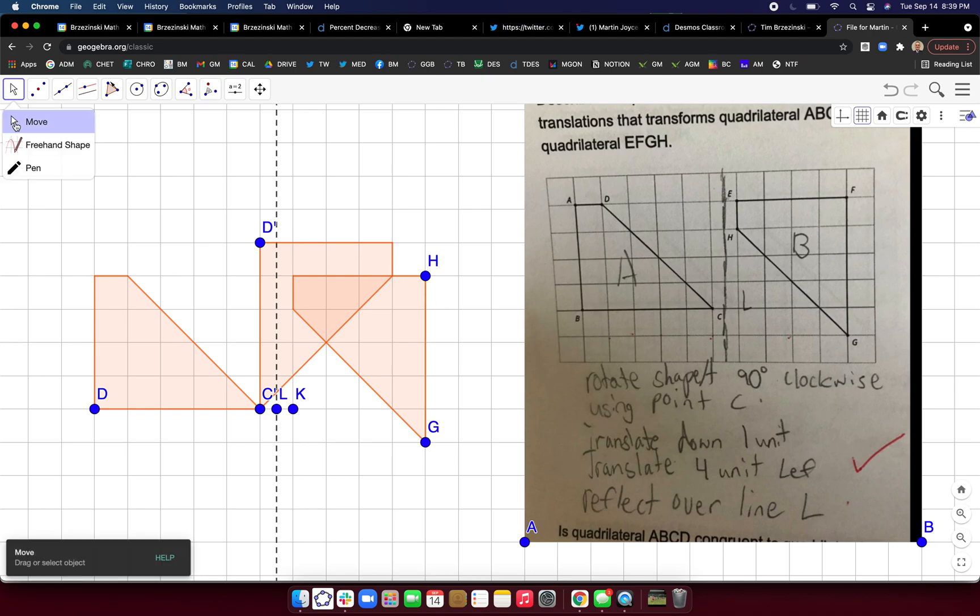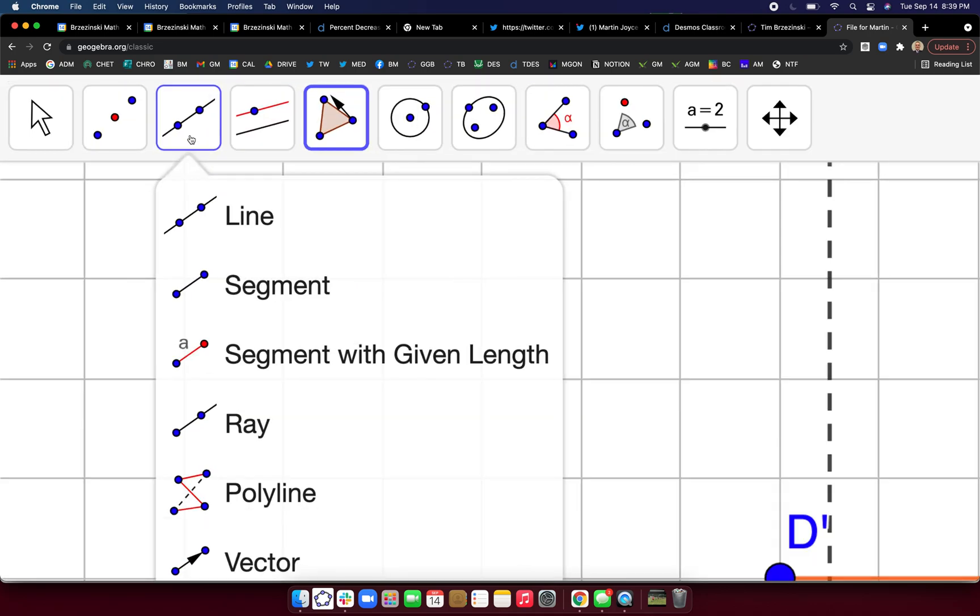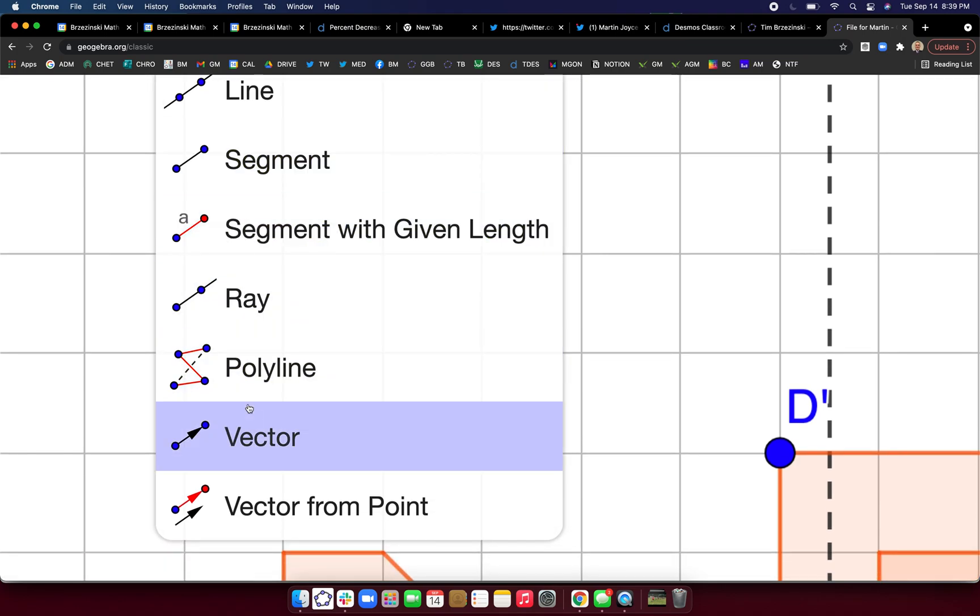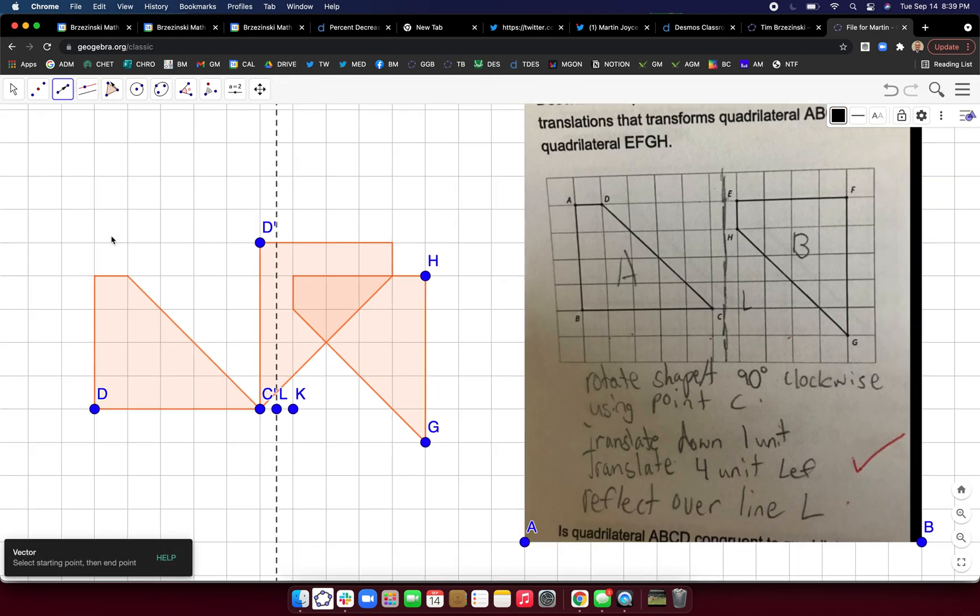Now the student says translate down one unit and translate four units left. So I'm going to do these two in one step. One down one, four left. So that would be, let's make a vector that shows that. And that's over here. Under the line tools, vector is down there. We'll click on vector. So that's really the vector negative four comma one. So go there, negative four, one. And I can put that vector anywhere I want. So there it is.